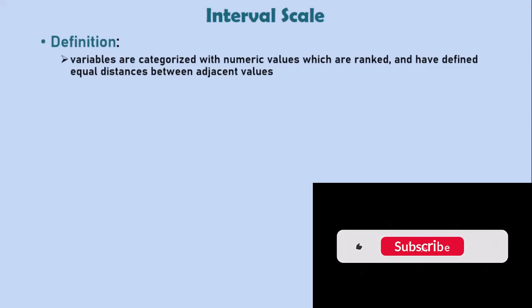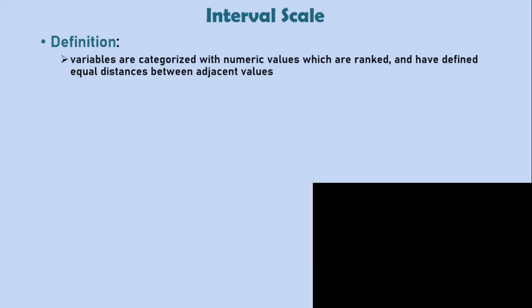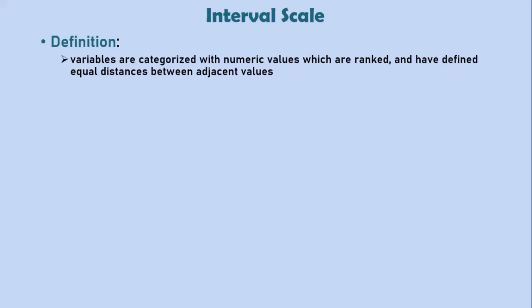On an interval scale of measurement, variables are grouped into categories with numeric values which are ranked and have equal distances from one point to the next. Here is the catch on an interval scale: zero on an interval scale is arbitrary and does not mean a complete absence of the variable.